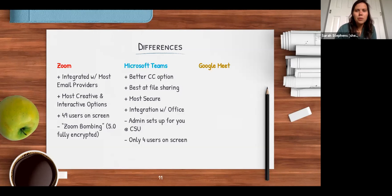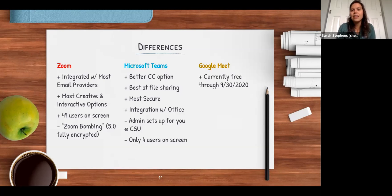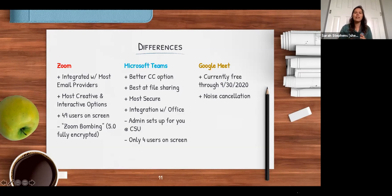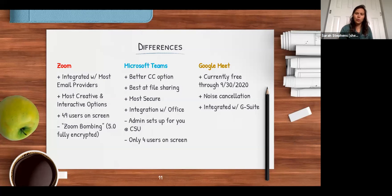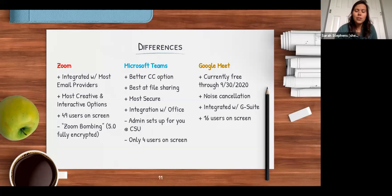Google Meet, which is probably new for most folks. There are pro and free versions, but through September 30th you can experience the pro version for free. It has a noise cancellation feature that can erase background sounds like a barking dog. It's integrated with Google — useful if students have a CSU email attached to Google rather than Outlook. You can have up to 16 users on screen, but it's not really the preferred platform at CSU.